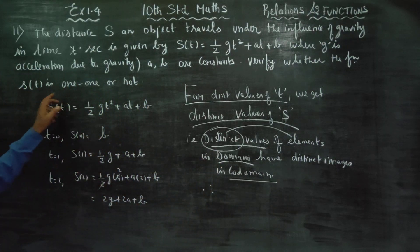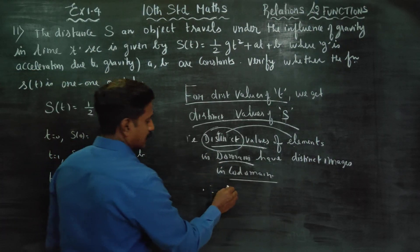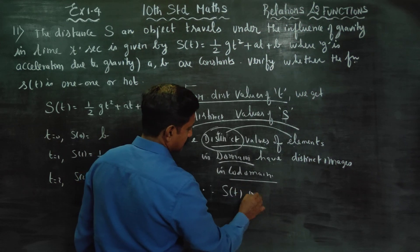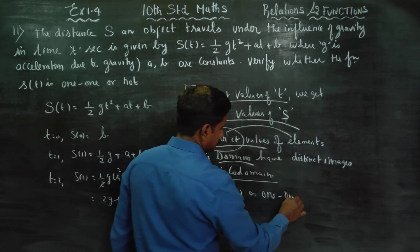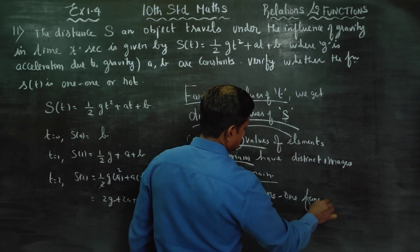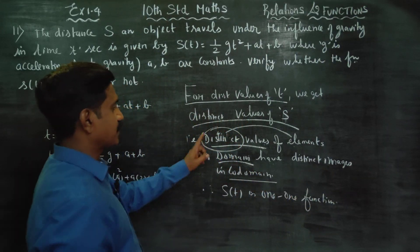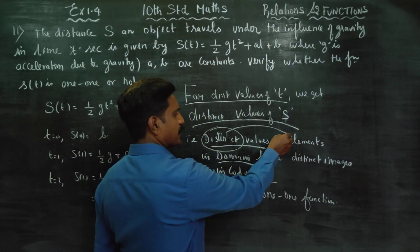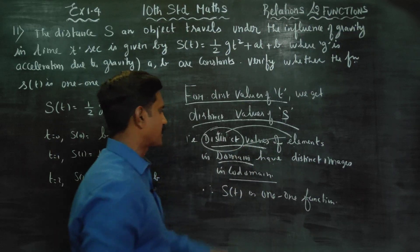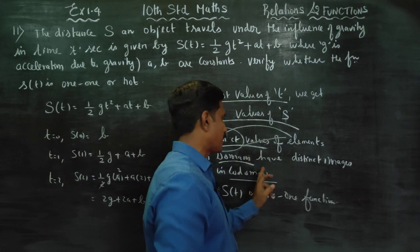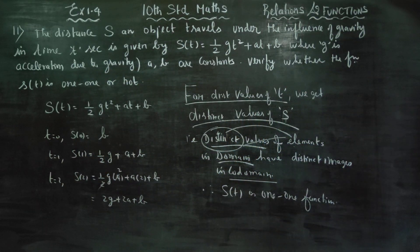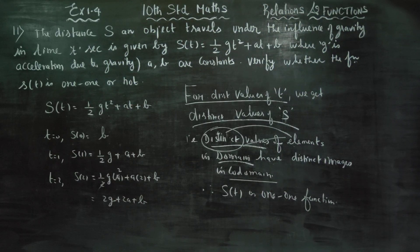Therefore, s of t is one-one or not — therefore s of t is a one-one function. Distinct elements in the domain have distinct images in the co-domain. Therefore s of t is a one-one function. You can finish this sum. Thank you.